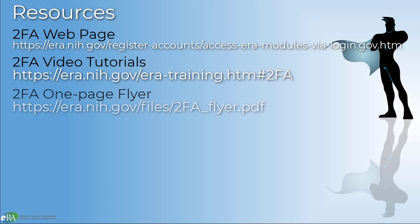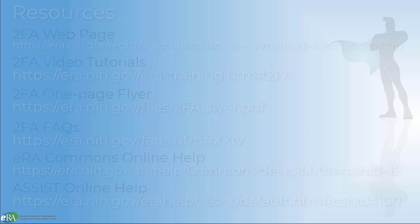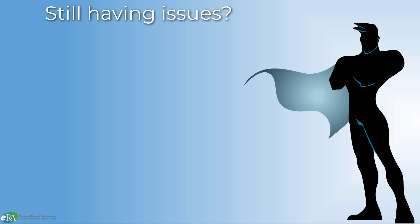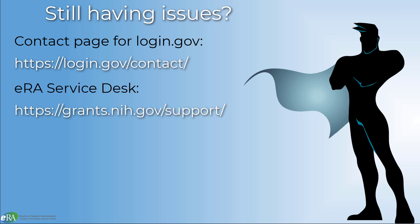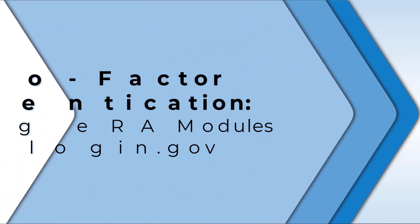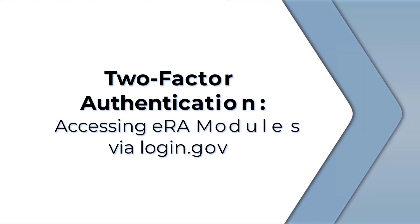There are a variety of resources available should you need help creating your login.gov account and associating it with your ERA Commons account. If you are still having issues with login.gov authenticating to ERA Commons, visit the login.gov contact page. For issues related to your ERA account or associating your login.gov account with your ERA account, contact the ERA Service Desk. This concludes the tutorial on creating a login.gov account, associating it to your ERA Commons account, and logging in to an ERA module using the login.gov option. Thank you for watching.